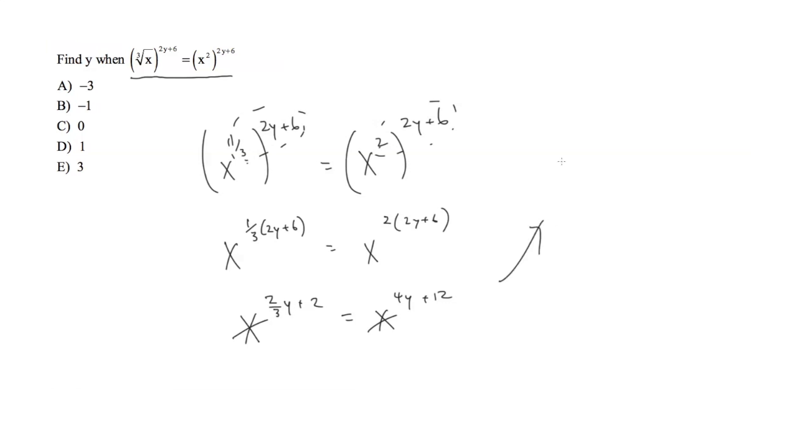2/3rds y is equal to 4y plus 10. Now, because I don't really like subtracting whole numbers and fractions, I'm just going to multiply everything times 3 to make it a little easier for me to deal with whole numbers.